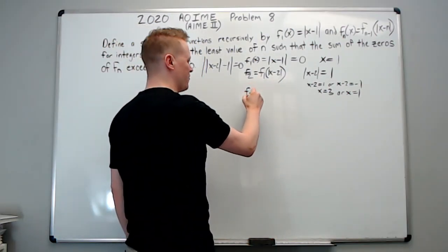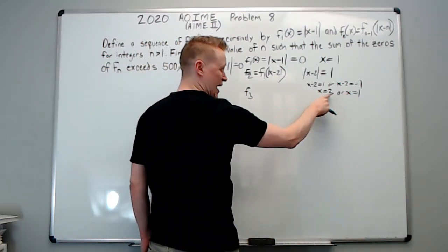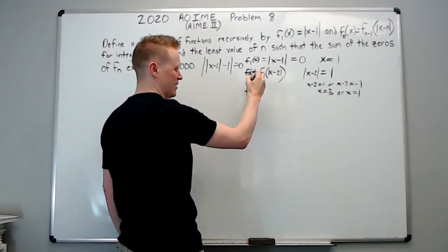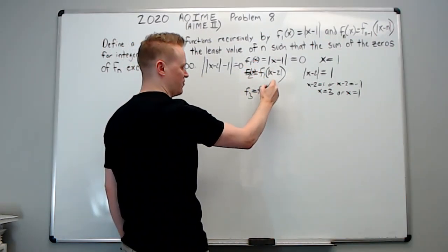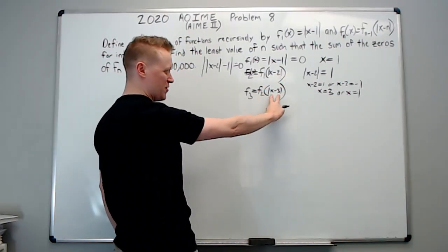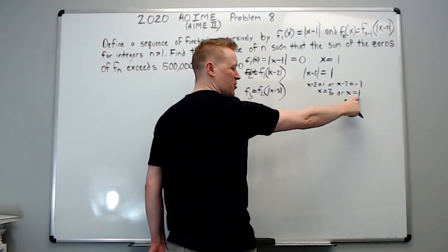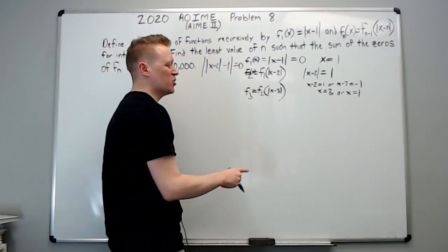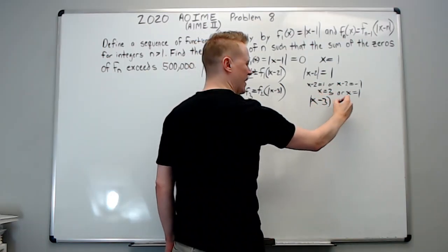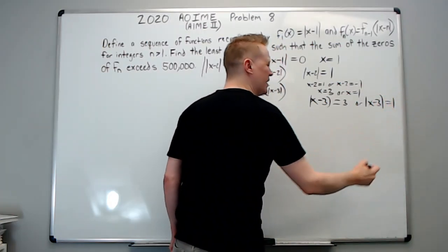If we go to F of three, it's going to be these values of X were the previous X for F of two. F of two X's, F of three being F of two of the absolute value of X minus three. So this right here becomes the X in F of two. And that X was equal to three and one. So we could say the distance between X and three is equal to three or the distance between X and three equals one.